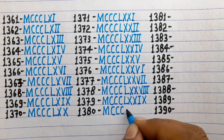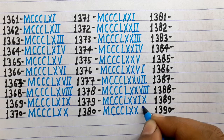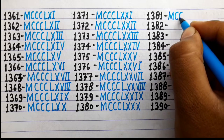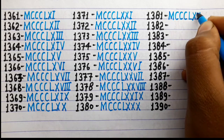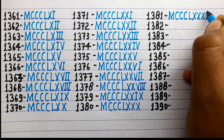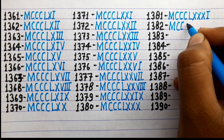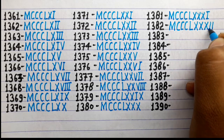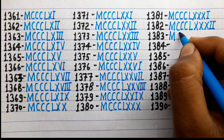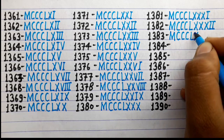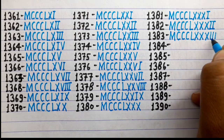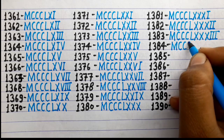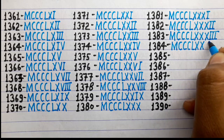1380 is MCCCLXXX. 1381 is MCCCLXXXI. 1382 is MCCCLXXXII. 1383 is MCCCLXXXIII. 1384 is MCCCLXXXIV.